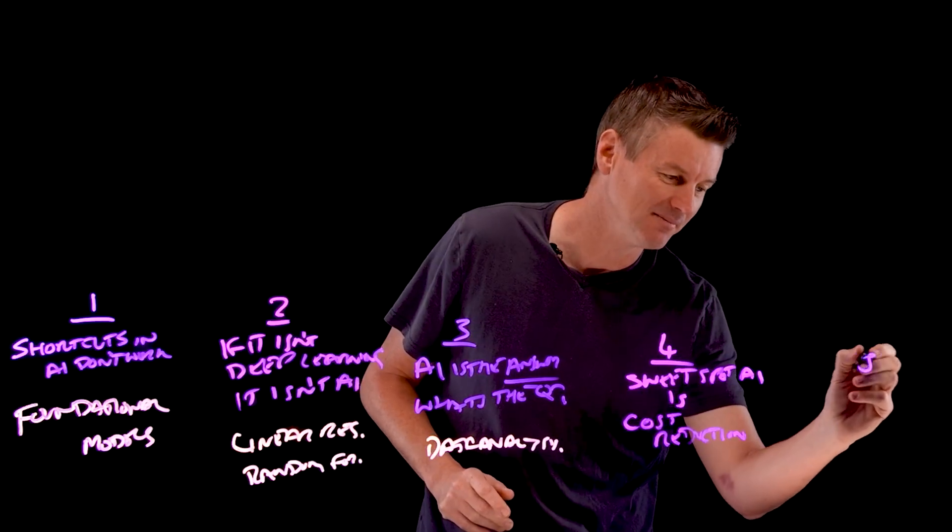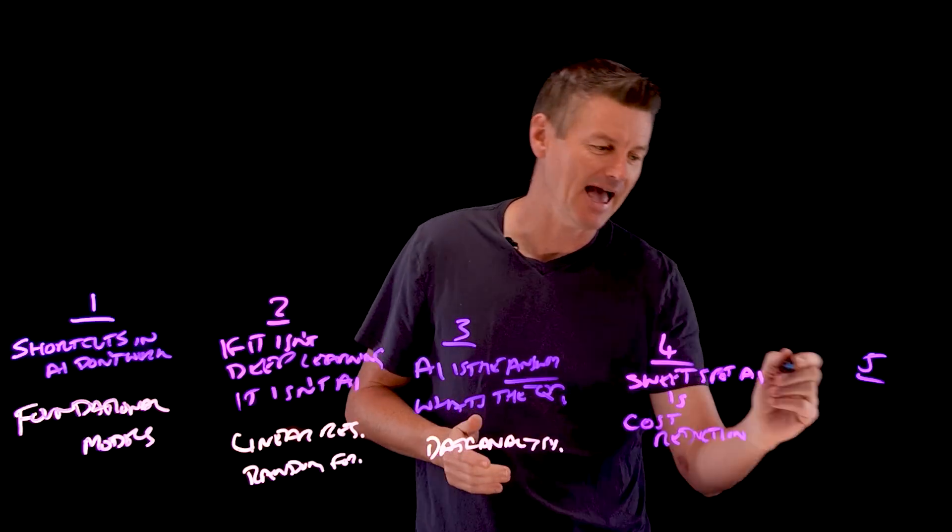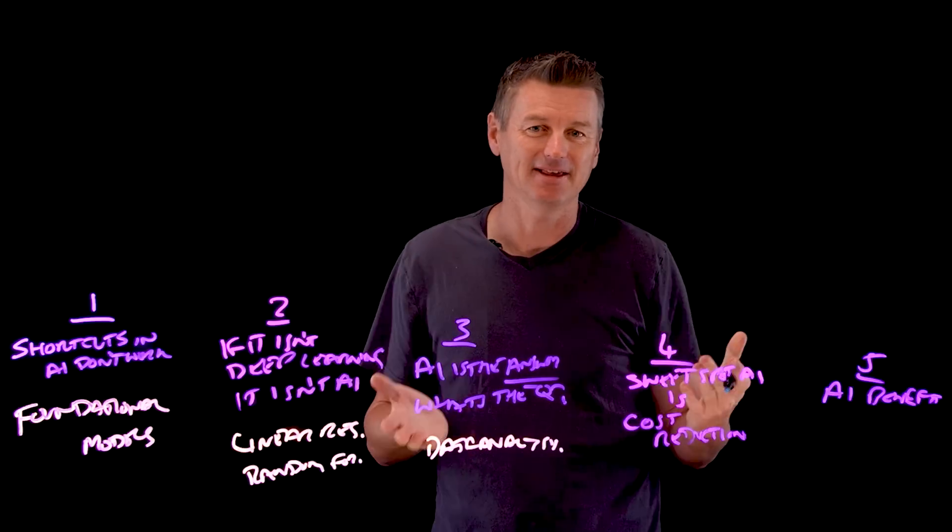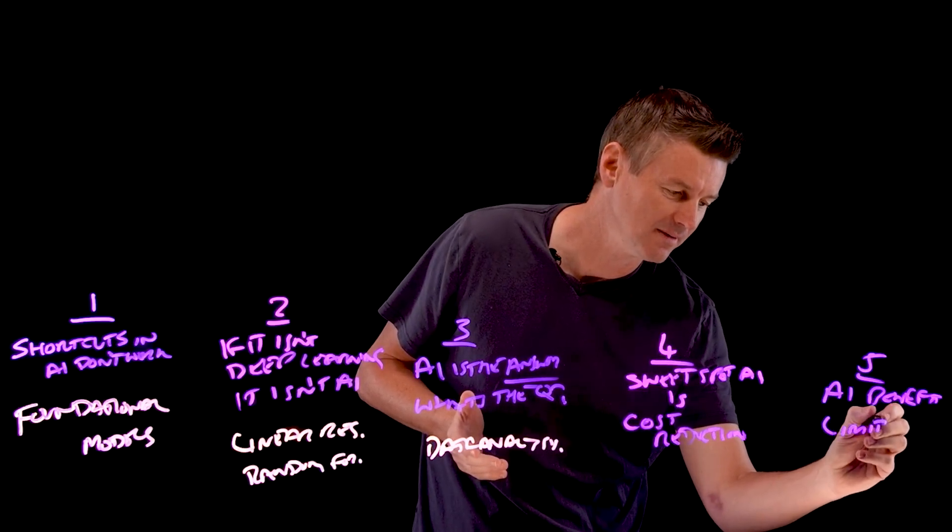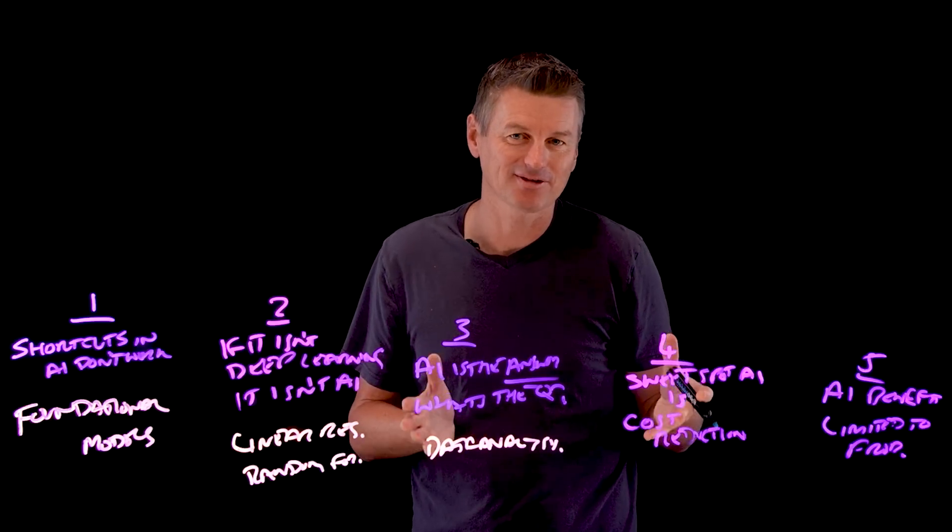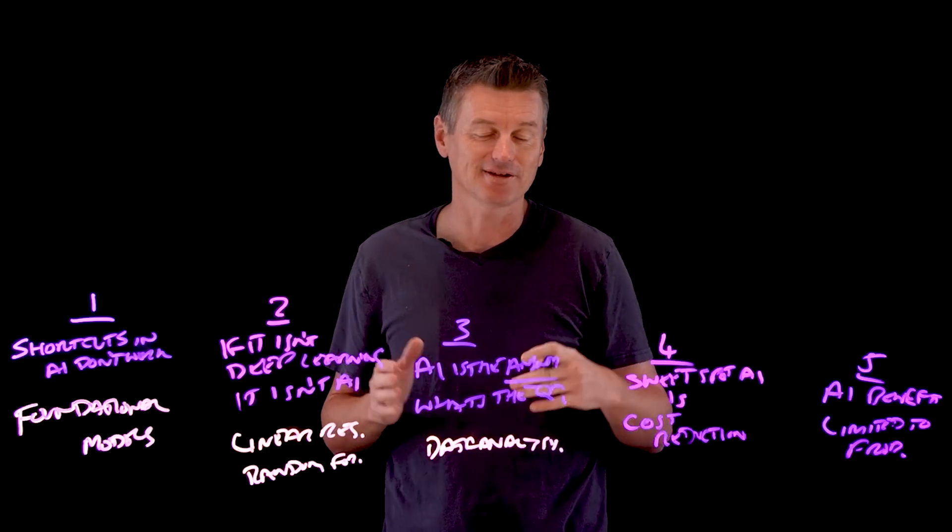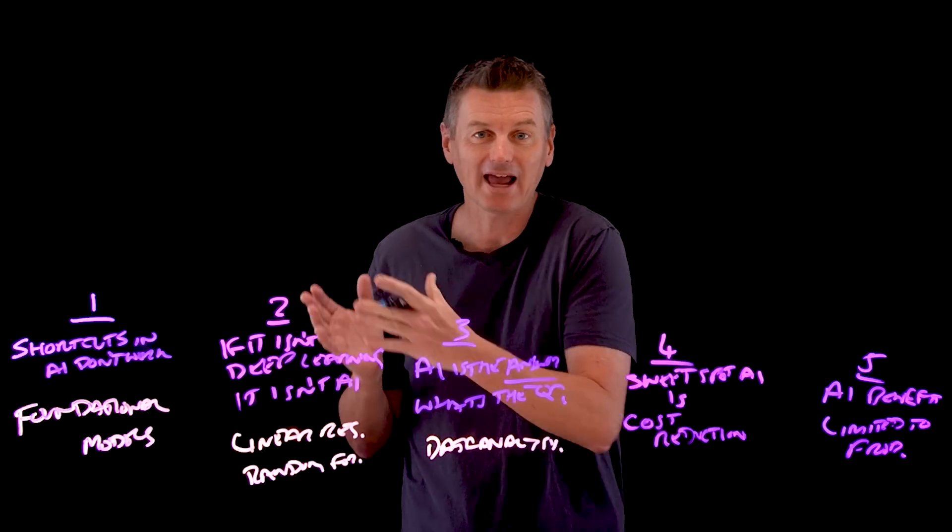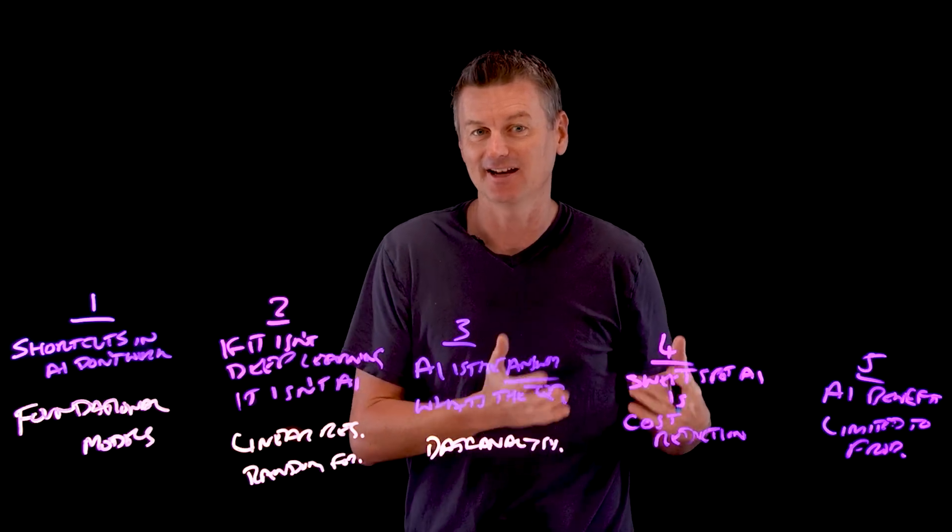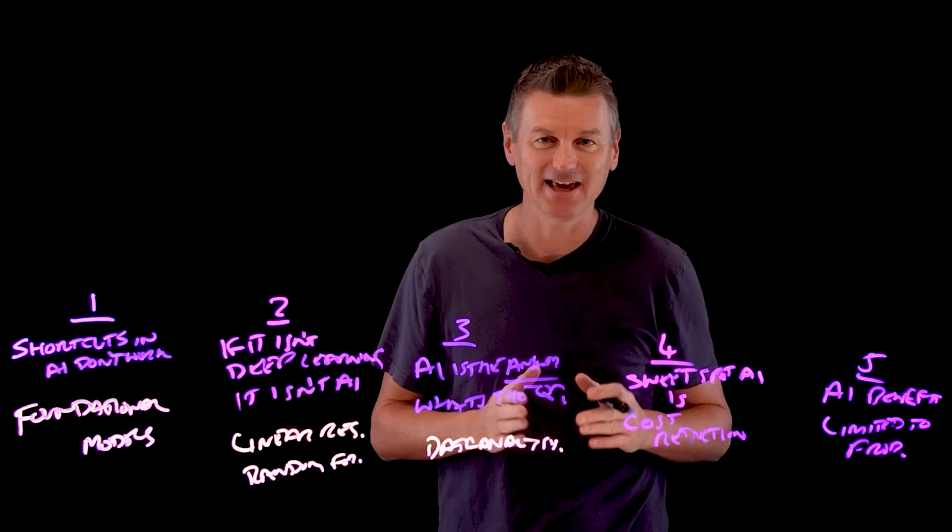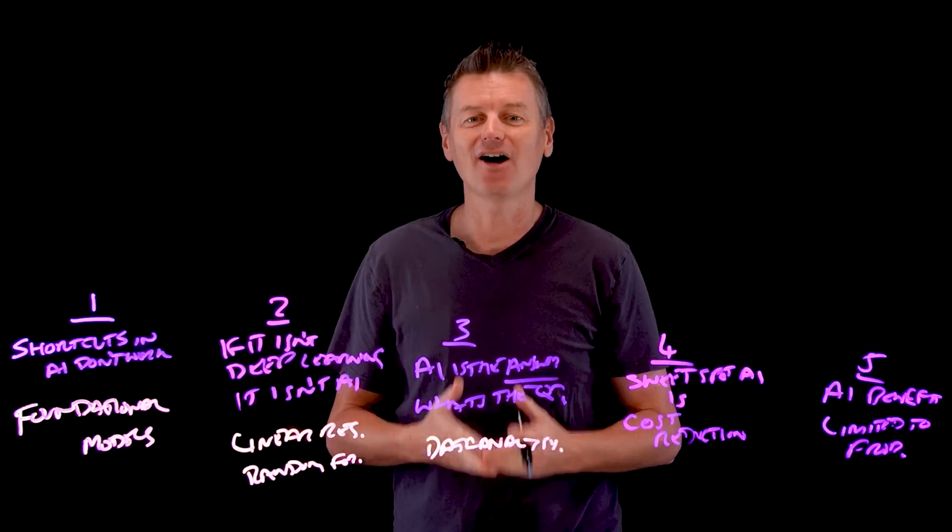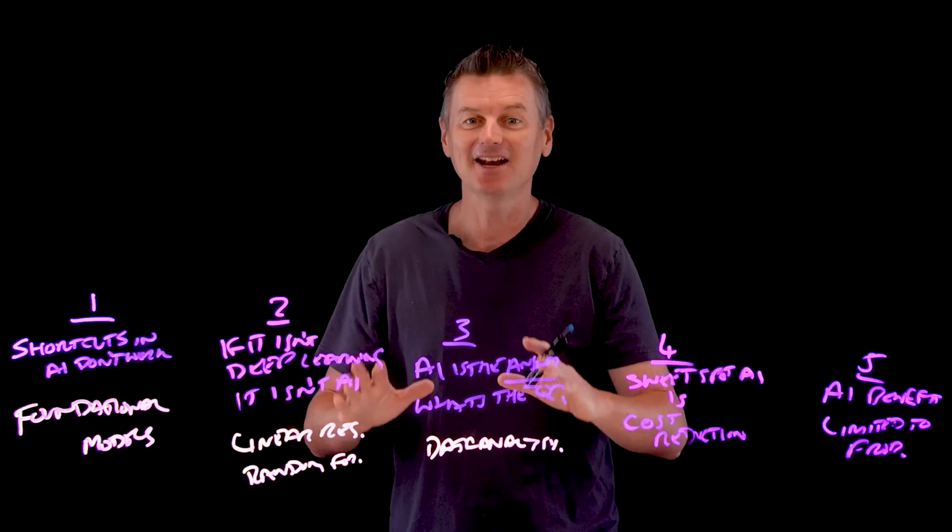Which brings us to myth number five. This one really says that the AI benefits are limited to the problem you're trying to solve. That's a very narrow view to take because contrary to this belief, AI's impact often reaches far beyond its initial target. Deploying AI in one aspect of a company can bolster adaptability and resilience in others. AI's transformative capability isn't restricted to a single department or to a single team. Once deployed, it can reshape entire organizations or indeed industries.